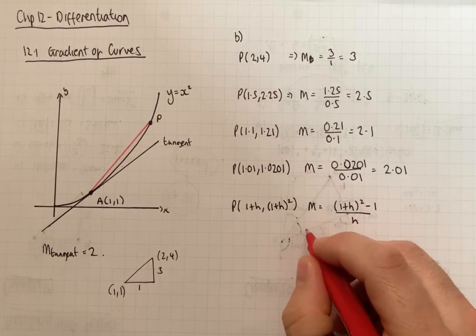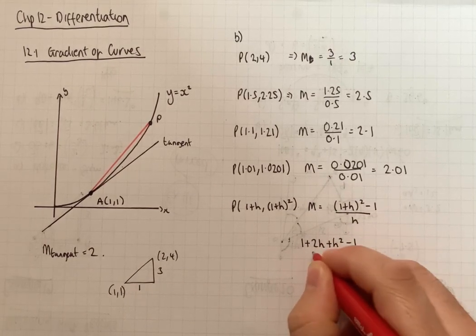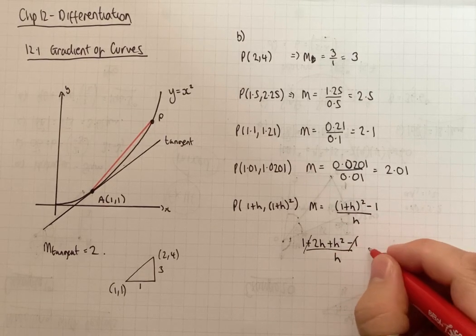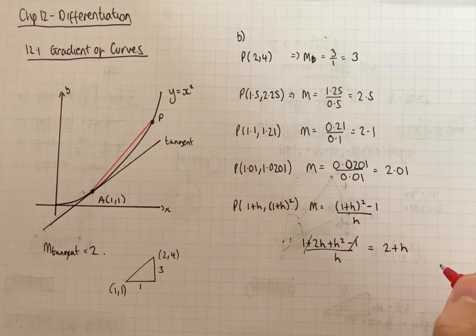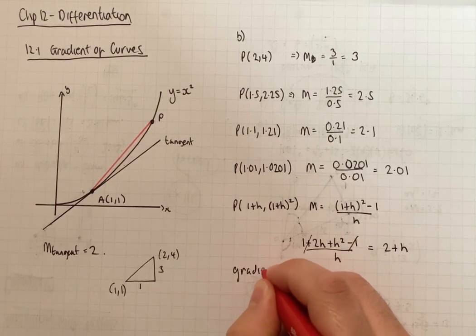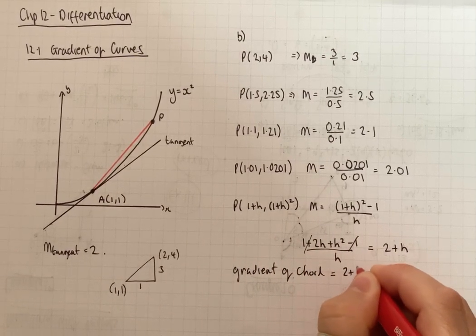So that would be 1 plus 2H plus H squared minus 1 over H. 1 minus 1 cancels. So that would give us just 2 plus H. So the gradient of the chord equals 2 plus H.